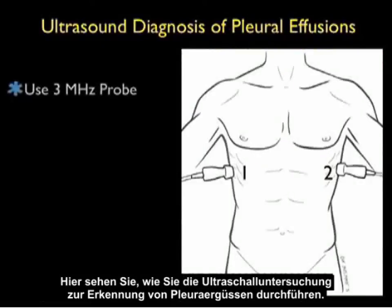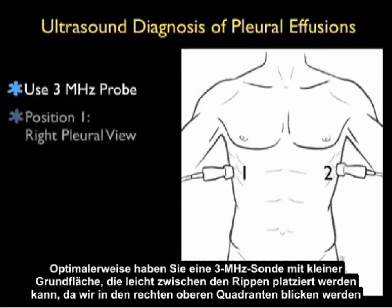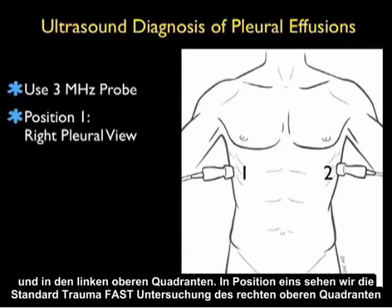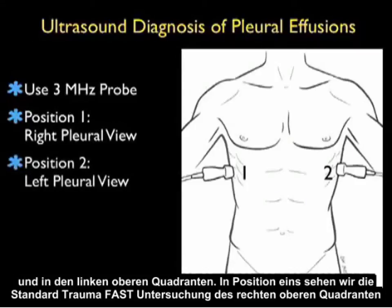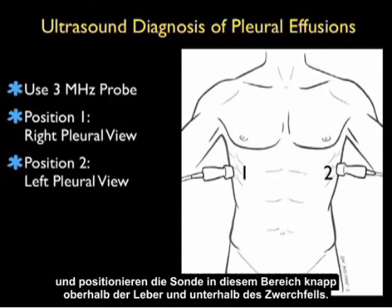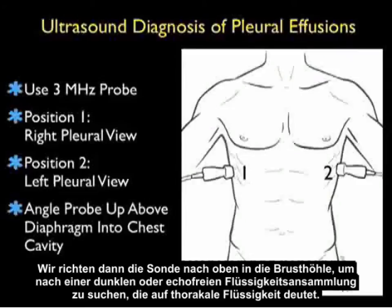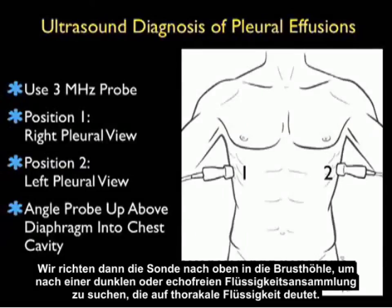Here's a slide reviewing how to perform the ultrasound examination for detection of pleural effusions. Optimally you'll have a 3 MHz probe with a small footprint that can easily sit between the ribs, as we'll be looking into the right upper quadrant and left upper quadrant areas. In position 1, we'll be coming into the standard right upper quadrant trauma fast exam and position the probe into that area just above the liver and below the diaphragm. We can then angle the probe upwards into the thoracic cavity to look for a dark or anechoic fluid collection signifying thoracic fluid.